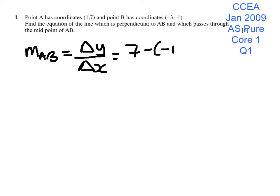So it's 7 take away minus 1, all over 1 take away minus 3. So this is a gradient of 8 over 4, which is 2.